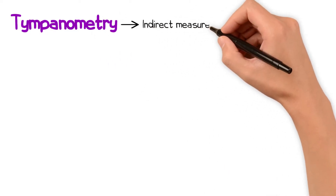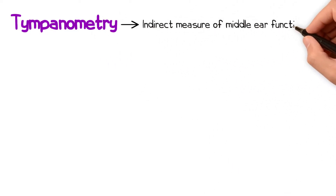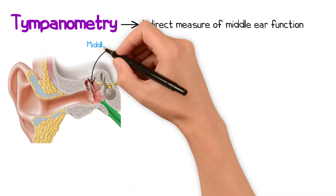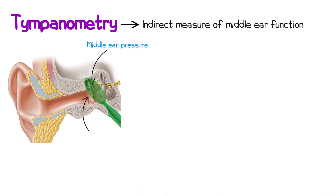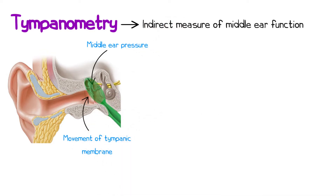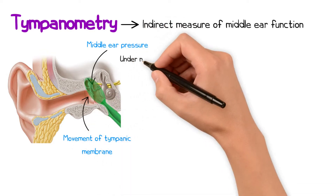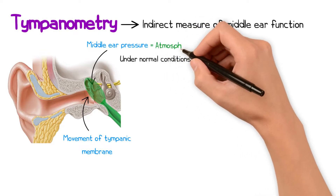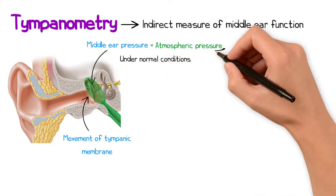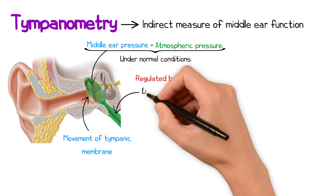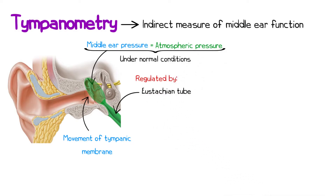Tympanometry provides an indirect measure of middle ear function, specifically assessing the pressure within the middle ear and the movement of the tympanic membrane. Under normal conditions, pressure in the middle ear matches the atmospheric pressure, and this balance is regulated by the eustachian tube and the mucosal gas exchange system.